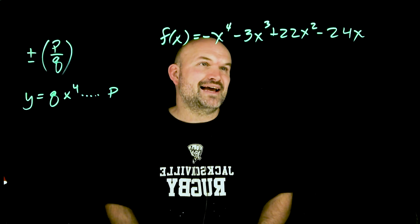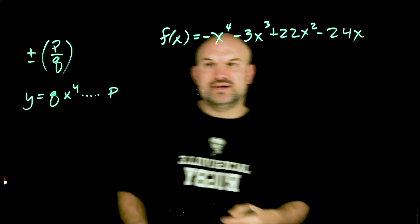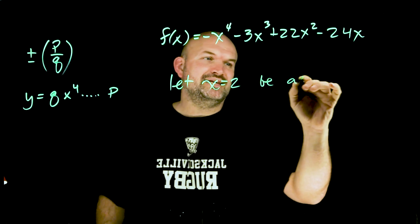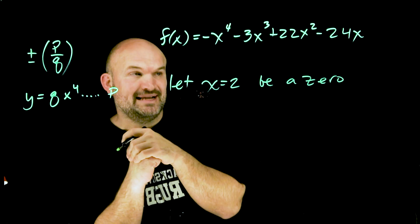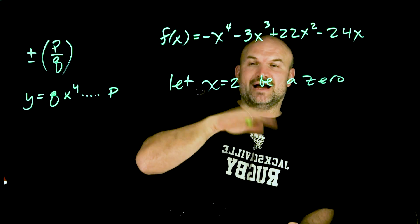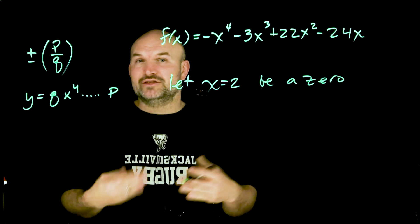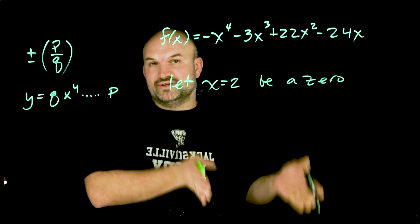Now part number two says let x equals two be a zero. Now let x equals two be a zero, find all the remaining zeros. The best thing about having a zero that we know is a zero of the polynomial is we can use division to find the remaining factors, and once we know what a factor is, all we simply need to do for that factor is set it equal to zero to find the remaining zeros.